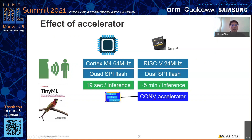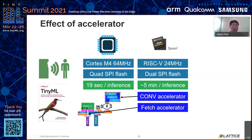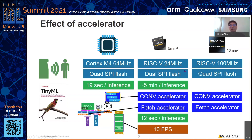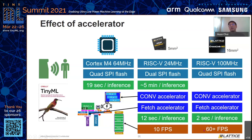What we did is we added the convolution accelerator for only the input channel part, plus the pre-fetch accelerator for instruction fetching. The result drops to about 12 seconds — a huge improvement, and also better than the Cortex-M baseline. In the extreme case, we map everything to hardware from input to output, and it achieves 10 frames per second, or about 100 milliseconds inference time. When we map the same thing to a larger FPGA at 100 MHz, the software-only path takes about 2 seconds, and the full hardware path reaches 60 frames per second. So you can see a very wide spectrum from small, low-power, flexible designs to fast, highly efficient ones.